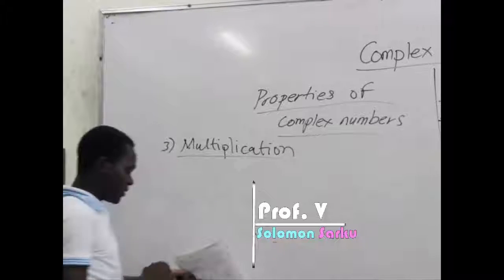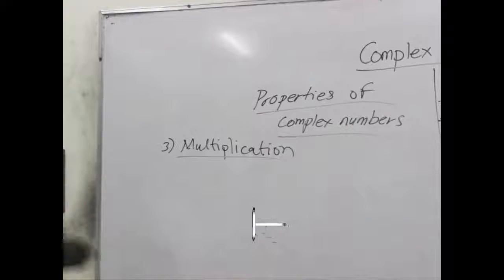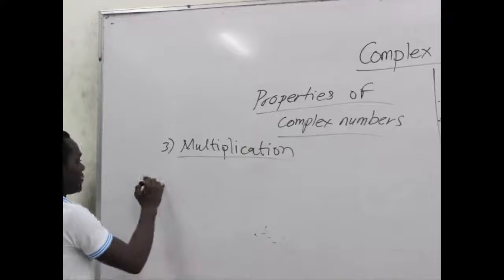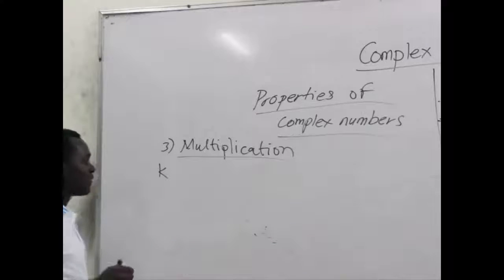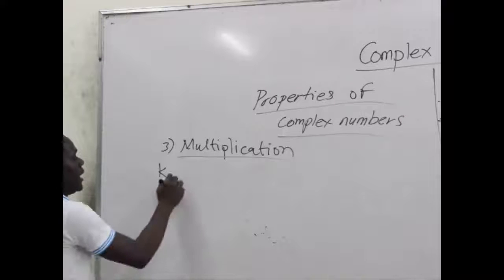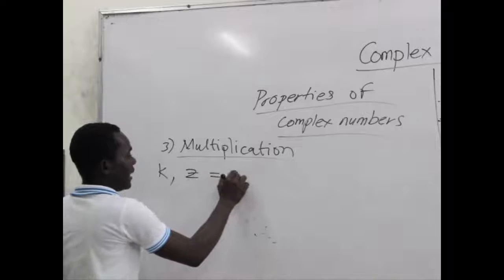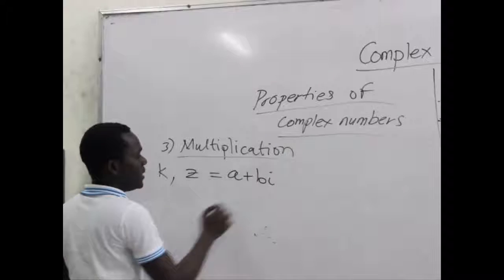For multiplication, it can be done by a scale factor or we multiply another complex number with others. The first aspect is by a scale factor. Assuming k is a scale factor and we have a complex number z which is given by a plus bi.